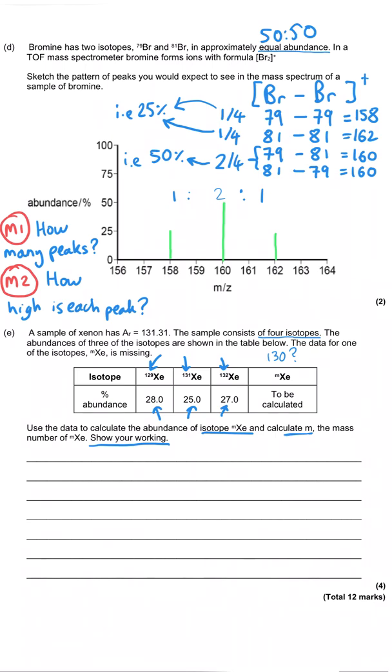So first of all, the easy part, what is the abundance? Well, we know that when it's a percentage abundance, the total needs to add up to 100%. So we need to subtract those three separate abundances away from 100. So 100 take away 28, take away 25, take away 27 gives us 20%. So that means that our unknown xenon isotope has got an abundance of 20%.